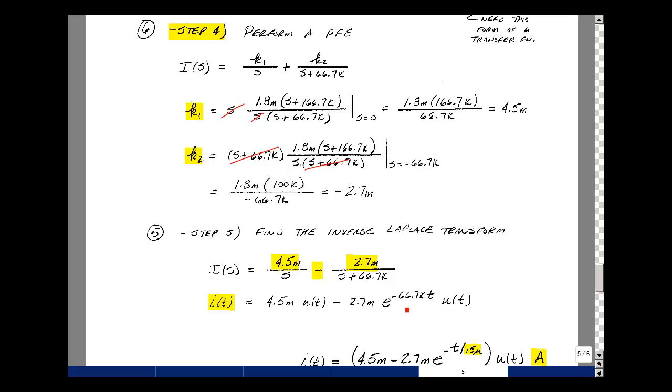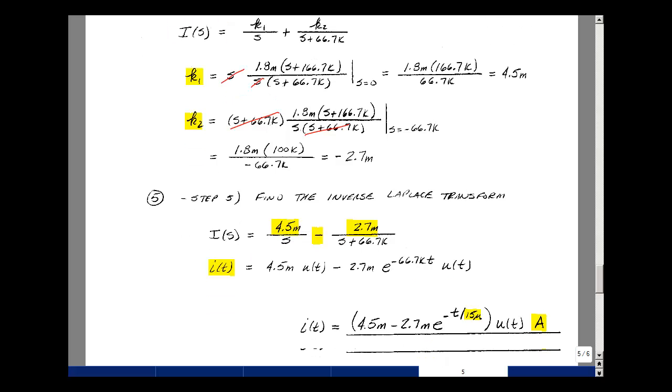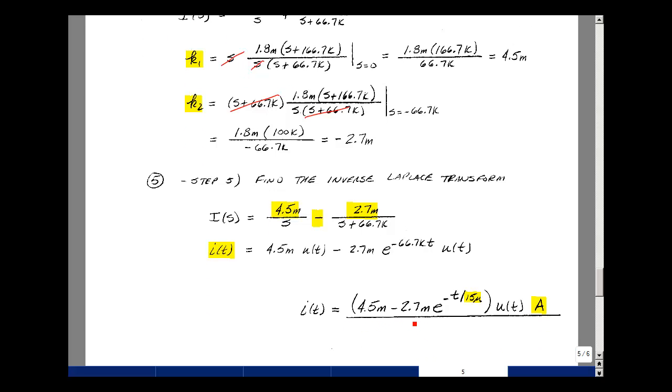Let's see, I put this in the form of a time constant, so I'll take the reciprocal of this, and it turns out to be 15 microseconds. So my final answer then is 4.5 mA minus 2.7 mA e^(-t/τ), which is 15 microseconds, all times u(t), and units of amps. I've indicated the partial credit in the steps that were given leading up to this answer, and again I'll take off one point if the units aren't present.